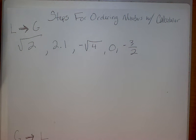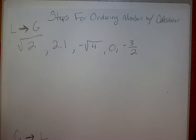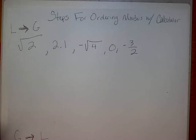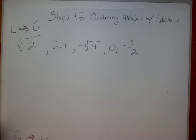All right guys, today we're going to talk about a skill that you've already learned previously early in the year, but today we're going to add a little twist to it where you won't even have to order the numbers yourself — you can do it on a calculator. The skill we're talking about is being able to order rational or irrational numbers. There are always steps when you're having to do something on a calculator, and you've seen this before.